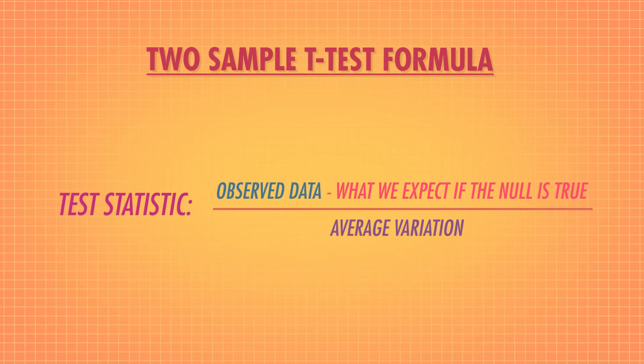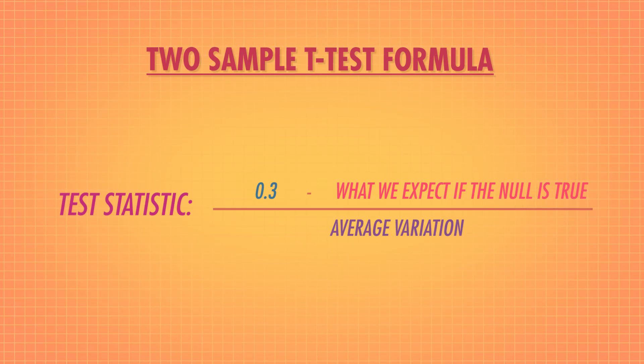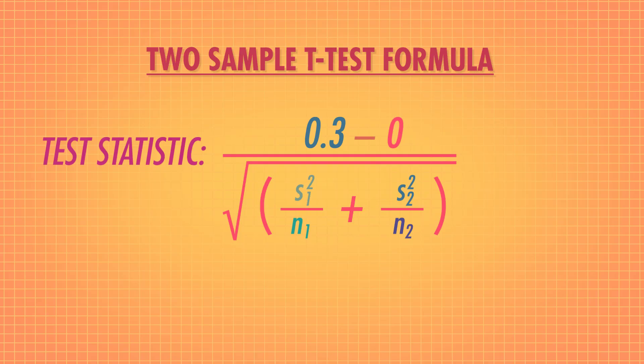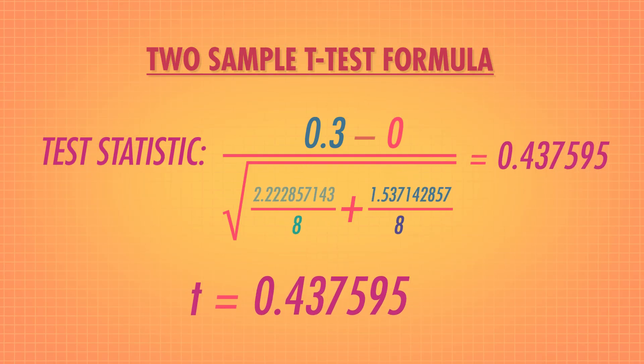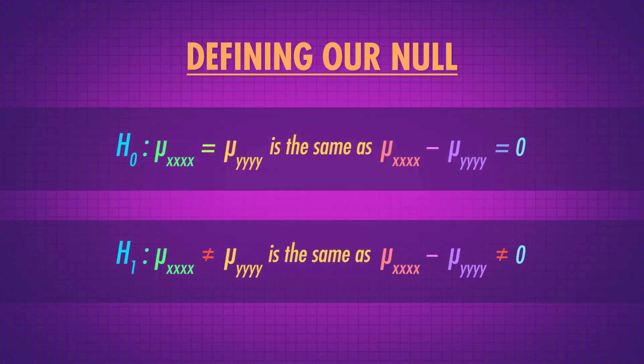The formula for a two-sample t-test follows our general test statistic formula. The difference we observed is 0.3. If the null hypothesis were true and there's no difference between the coffee shops, we'd expect a difference of 0. So the numerator of our t-test is 0.3. For this kind of t-test, our measure of average variation is the standard error. However, for two groups, the standard error is calculated a bit differently, since we have to account for the sample variance of two groups. Here we're squaring the standard deviation to get the variance, and n1 and n2 are the sizes of the two groups — both are 8 here. Now that we have our t-value, we can figure out if there's a statistically significant difference between the two coffee shops.